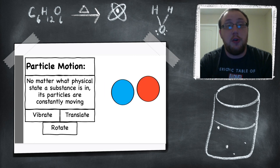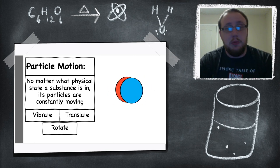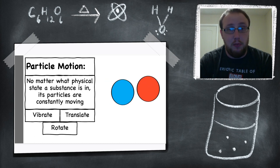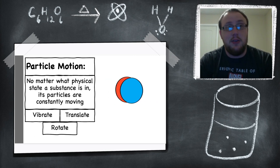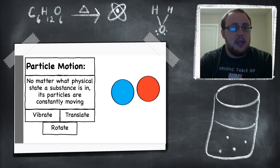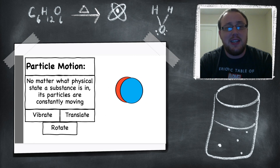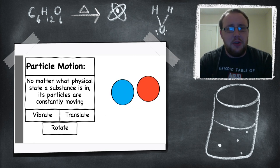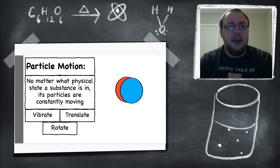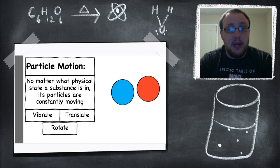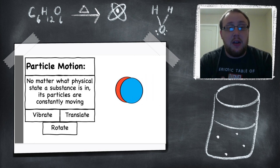Then you have translation, or particles translate. Just like in math when a translation occurs, we think of an object sliding. Think about the letters SL in translate — that can be the same as slide. So particles that translate slide around. They have more freedom than vibrating particles and they have the tendency to slide past one another. They're not just staying in one little area; they're moving all around and crossing each other, basically free to move as they wish.